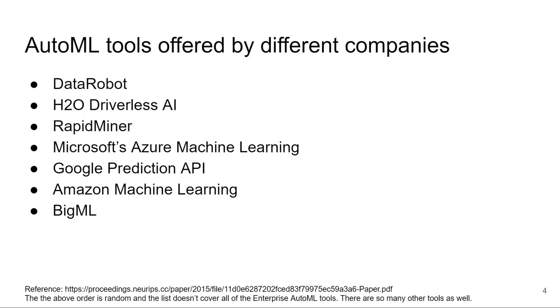These are some of the AutoML tools offered by different companies. Some of them are DataRobot, H2O Driverless AI, RapidMiner, Microsoft Azure Machine Learning, Google's Prediction API, Amazon Machine Learning, and BigML. There are so many other tools as well, do check it out.